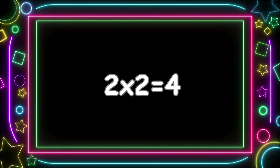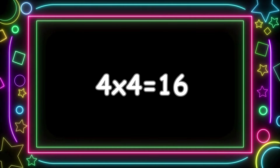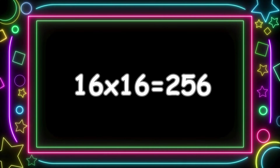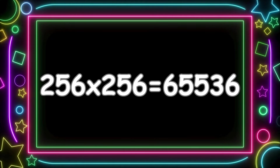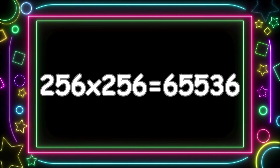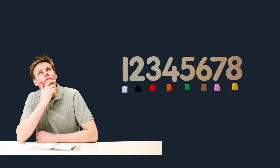If instead of multiplying by 2, we multiply the number by itself: 2 times 2 equals 4, 4 times 4 equals 16, 16 times 16 equals 256, 256 times 256 equals 65,536.